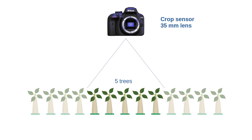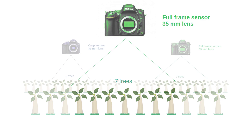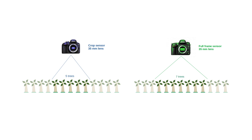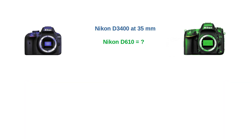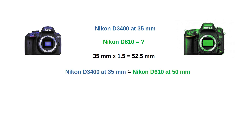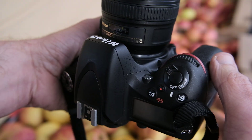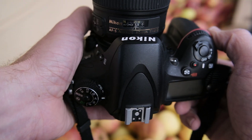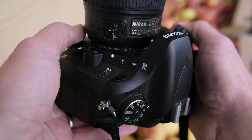Let's first match the angle of view. The angle of view refers to how much of the scene the camera captures. A crop sensor camera makes a lens behave as if it has a longer focal length compared to the full-frame camera. To match the angle of view between the D3400 and D610, we need to adjust the focal length of the full-frame camera. To find the equivalent focal length for the full-frame Nikon D610, we multiply the crop sensor focal length by the crop factor. So with a 35mm lens on the D3400 and a crop factor of 1.5, the full-frame equivalent focal length is 35mm × 1.5 = 52.5mm. This means that on the Nikon D610, you would need a lens set to around 50mm to match the angle of view you get with a 35mm lens on the D3400.